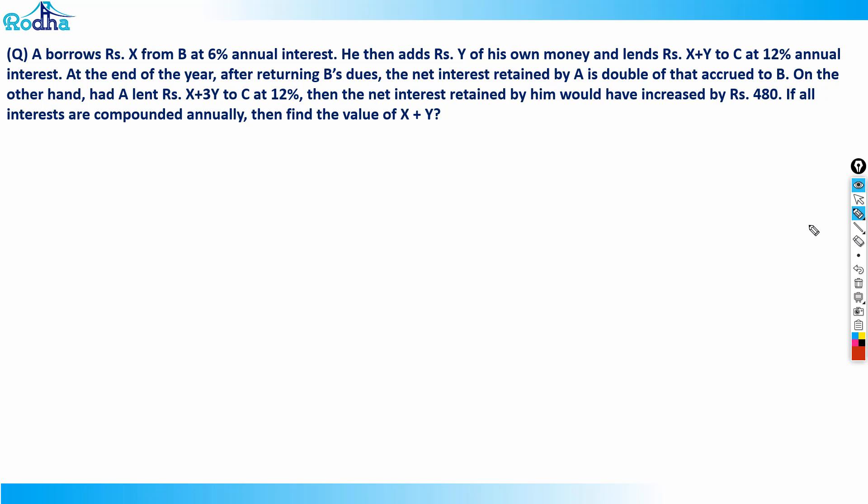This question says that A borrows rupees X from B at 6 percent annual interest. He then adds rupees Y of his own money and lends rupees X plus Y to C at 12 percent annual interest. At the end of the year, after returning B's dues, the net interest retained by A is double of that accrued to B. On the other hand, had A lent rupees X plus 3Y to C at 12 percent, then the net interest retained by him would have increased by rupees 480. If all interests are compounded annually, find the value of X plus Y.